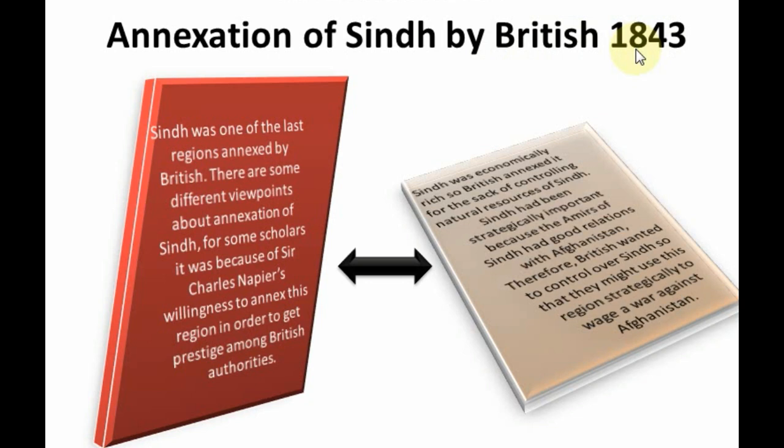Today we will discuss the most important topic: the annexation of Sindh by the British, which happened in 1843. In this topic we will cover different phases and different treaties relating to the annexation of Sindh. We will also discuss the First Anglo-Afghan War. Let's start the topic.